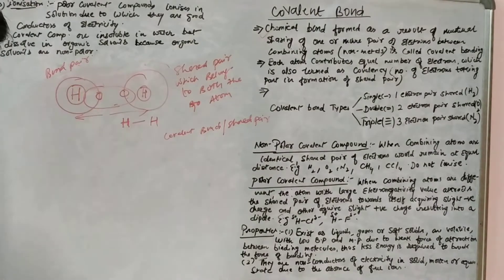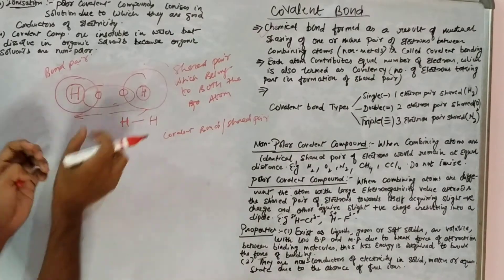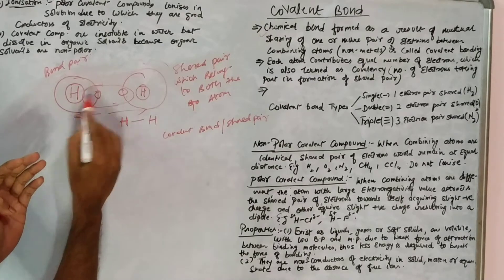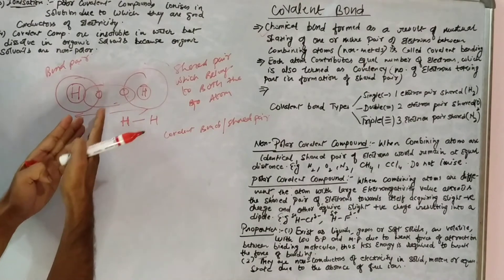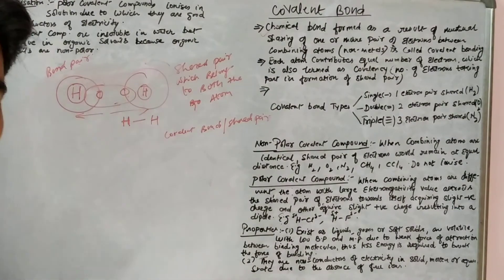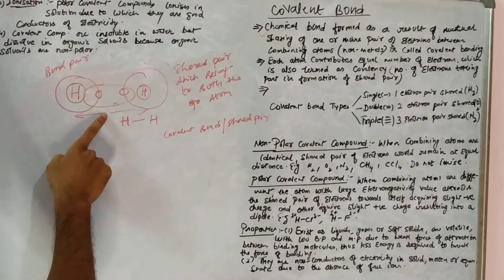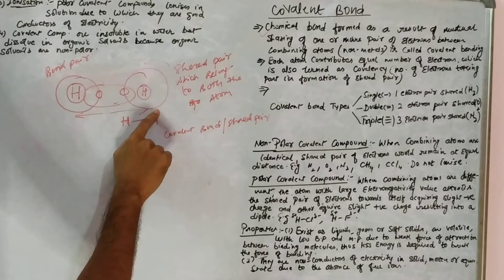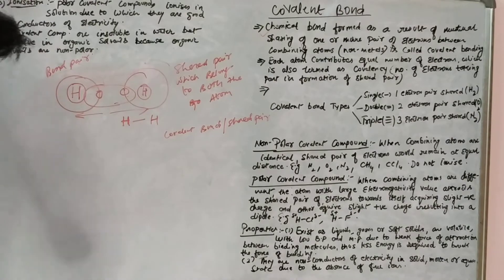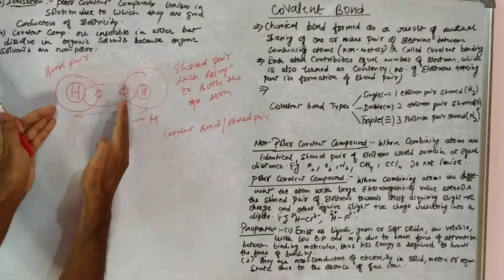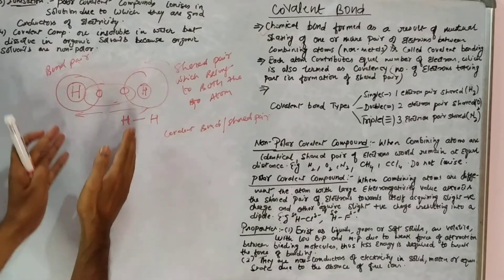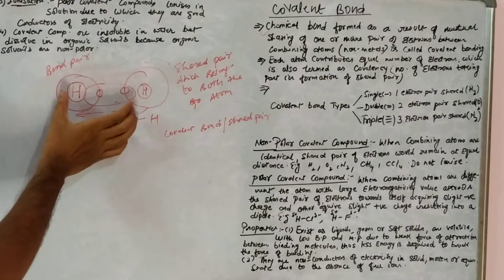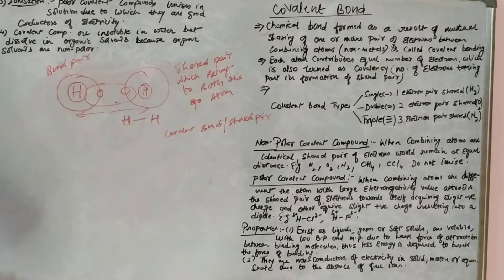This shared pair of electrons would be equally attracted by both hydrogen atoms. It is due to this mutual attraction that both hydrogen atoms are bonded in the hydrogen molecule — each hydrogen atom is attracting the electron pair towards itself, so there is a force of attraction between both hydrogen atoms due to this shared pair of electrons.